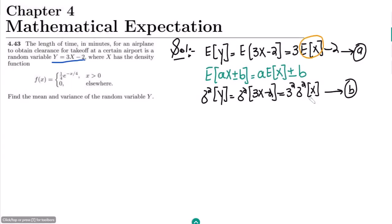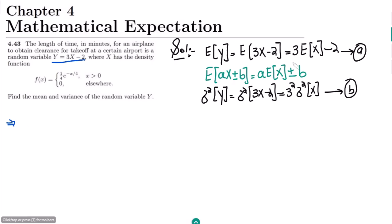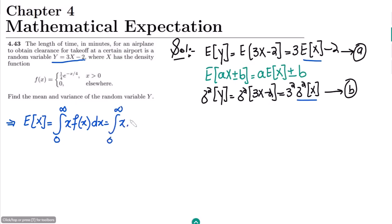In all of these equations we can see that we need to find E[X] and σ²(X). So first we have to treat X and find its mean and variance. The expected value of X would be the integral from 0 to infinity — because x > 0 and 0 elsewhere — of x multiplied by f(x) dx. Substituting f(x), it becomes the integral from 0 to infinity of x times (1/4)e^(−x/4) dx.